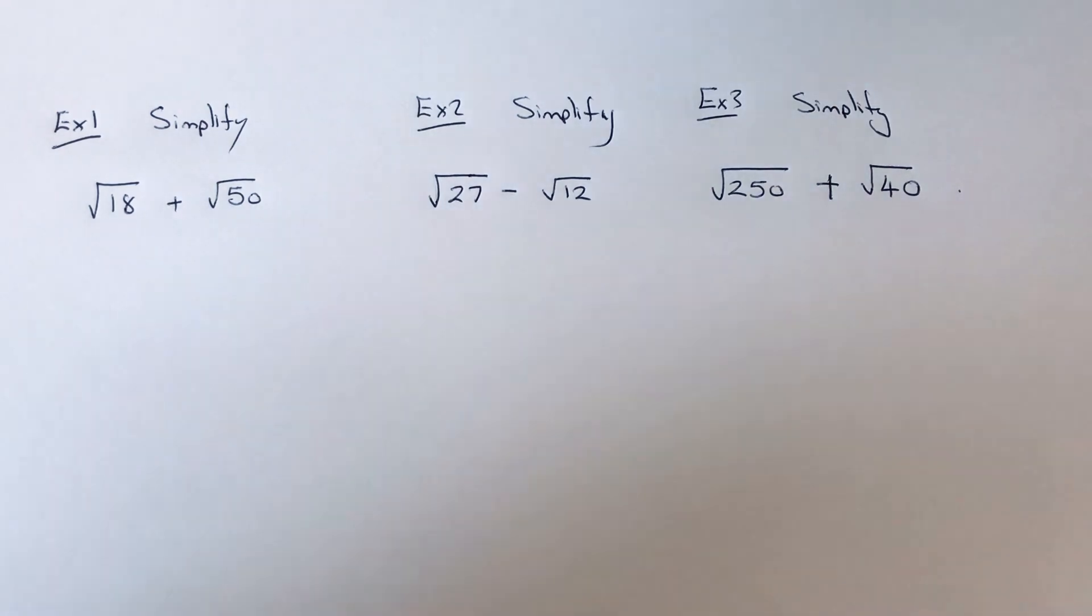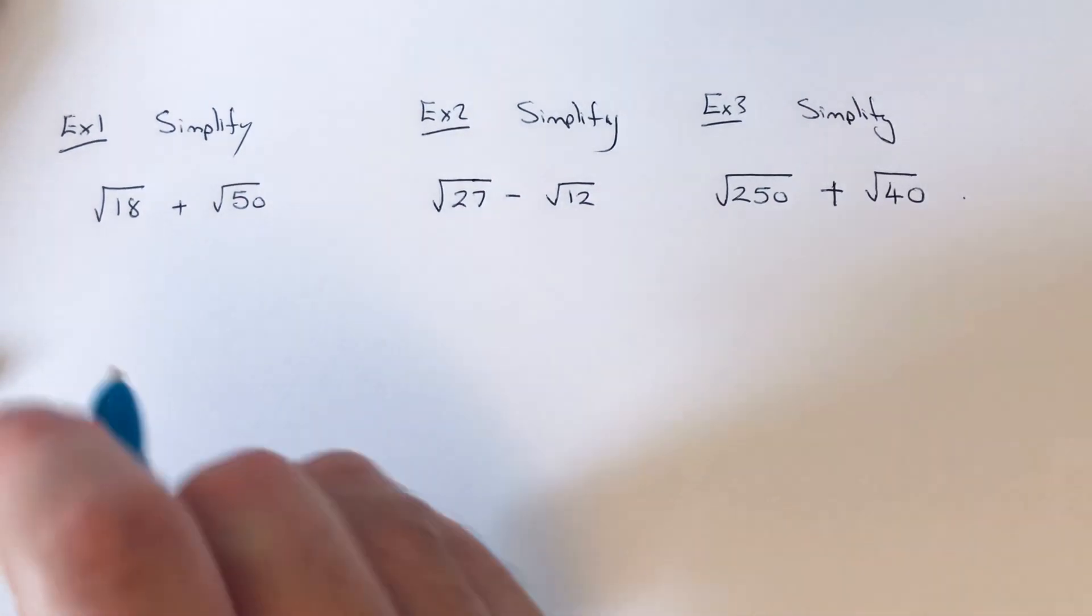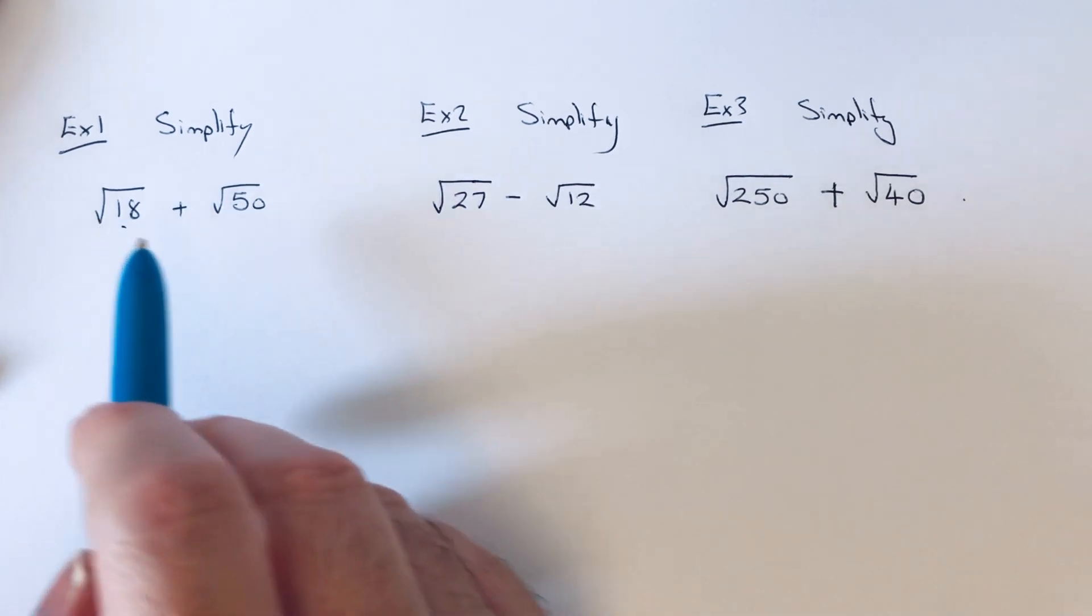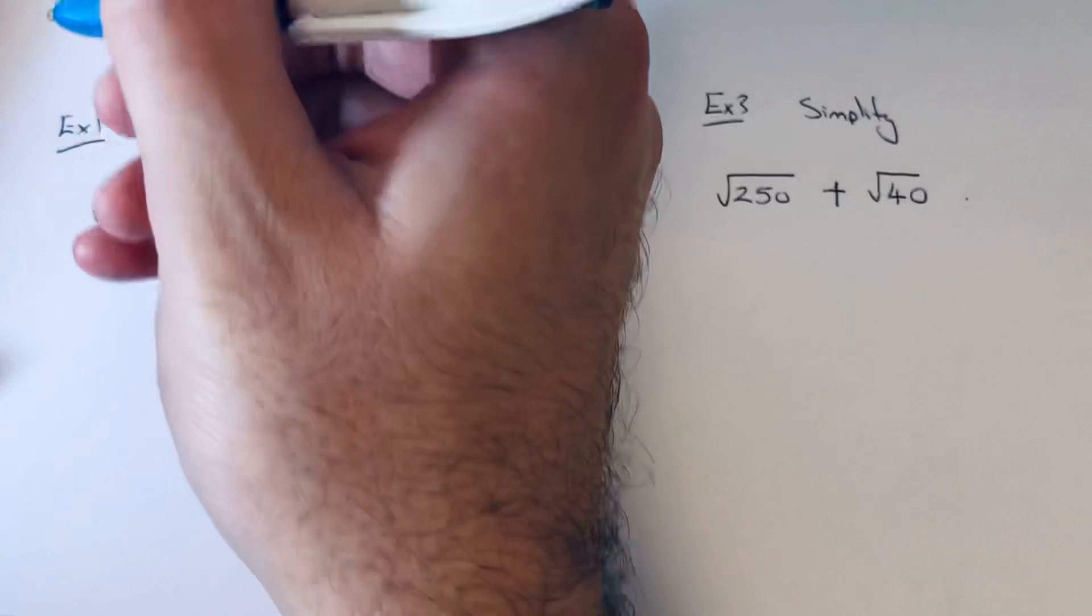So if you don't know how to simplify a third, what you need to do is look for a square number which goes into the number that you're simplifying. So it's probably a good idea to write your square numbers down before you start off.